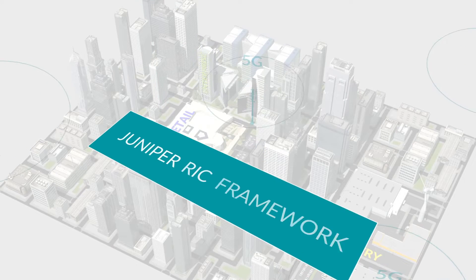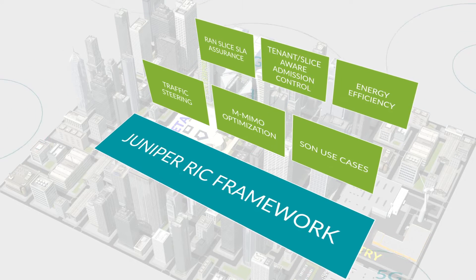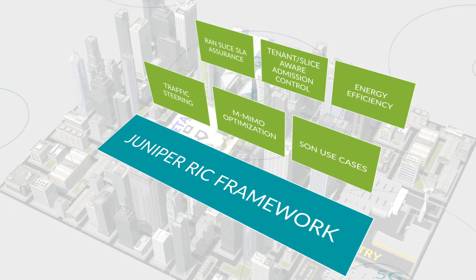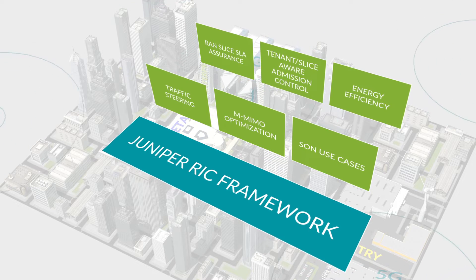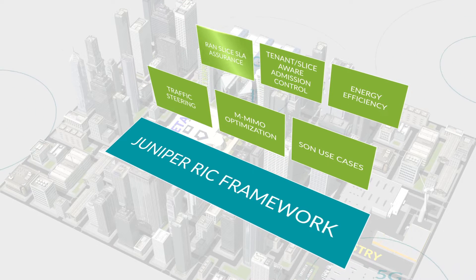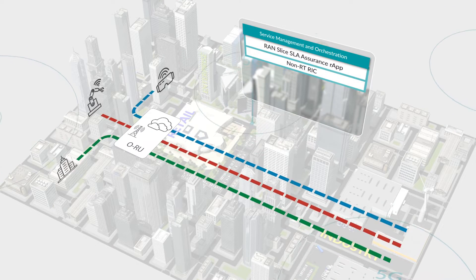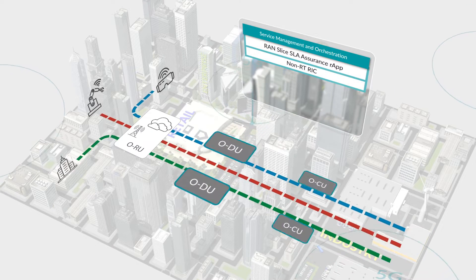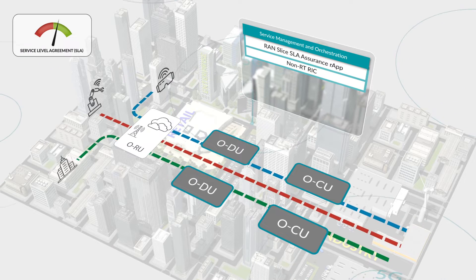Now with Juniper's RAN Slice SLA Assurance application, you can assure the delivery of different SLAs for each slice. The SLA Assurance R app continuously monitors the slice-specific performance metrics and the resource utilization levels across the network for all slices.